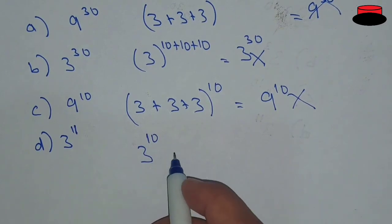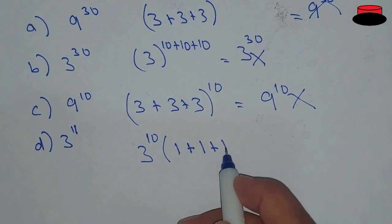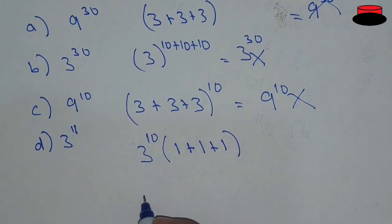From 3^10 + 3^10 + 3^10, the common factor is 3^10. Taking 3^10 as common, inside the bracket we have 1 + 1 + 1.